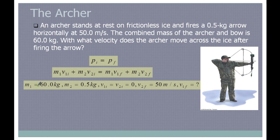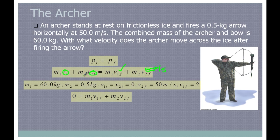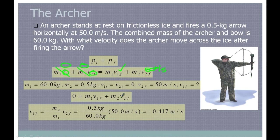We write down what we know. M1 is the mass of the archer and bow; M2 is the mass of the arrow. Initially both the archer and the arrow are moving with zero speed. The final velocity of the arrow is 50 meters per second. Since all these initial terms equal zero on the left side, we have: zero equals the final momentum of the archer and bow plus the final momentum of the arrow.